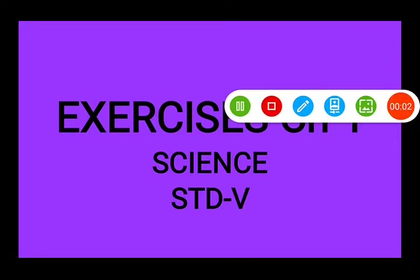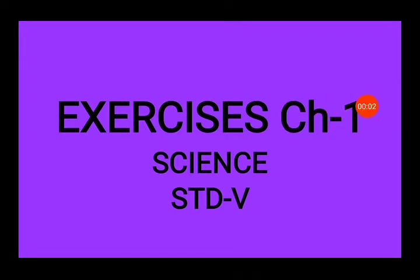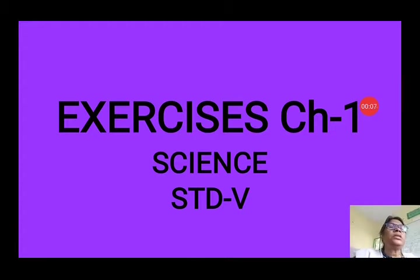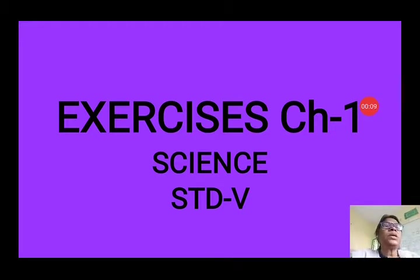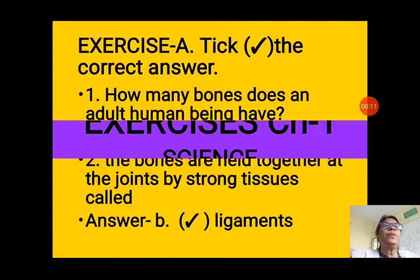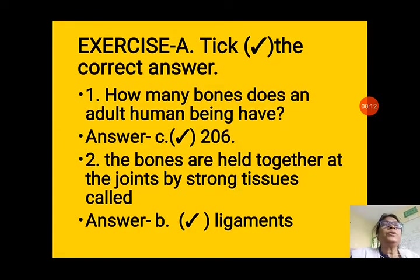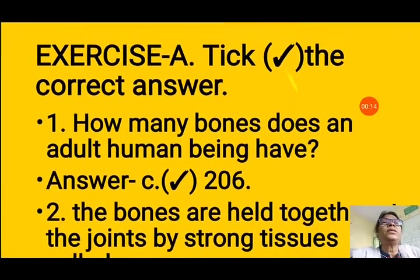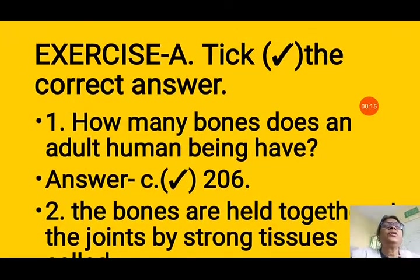Good morning Standard 5 students. Today we will start the exercises of Chapter 1: Skeletal System and Muscular System. Let us start the exercises. First we will discuss the objective type questions. Exercise A first — tick the correct answer.